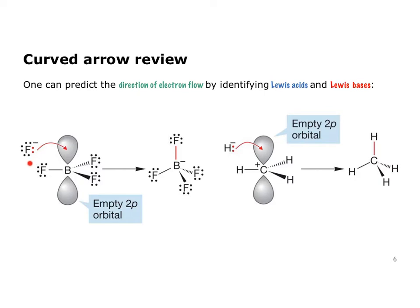Boron is an open-shell compound; in its neutral form there are only six electrons — the three bonds to boron — and there's an empty 2p orbital. Lewis bases like fluoride ion react with that quite readily, forming the tetrafluoroborate ion, which is a rather stable ion. We see that same pattern when negatively charged species react with carbocations: a methyl carbocation, which is trigonal planar, reacts with hydride ion to form neutral methane. Lewis base is an electron-pair donor; Lewis acid is an electron-pair acceptor. If we understand which is the Lewis acid and which is the Lewis base, we understand the flow of electron density from base to acid.